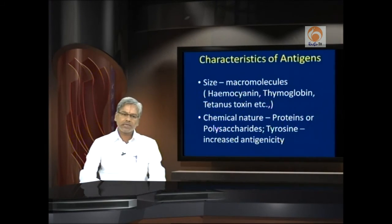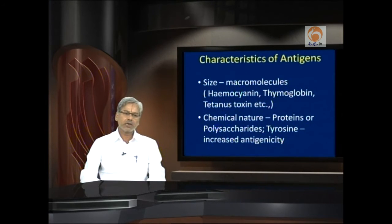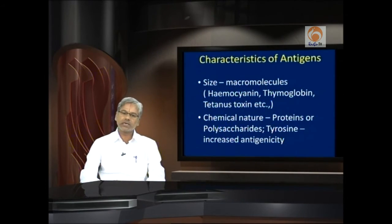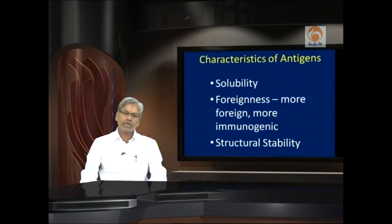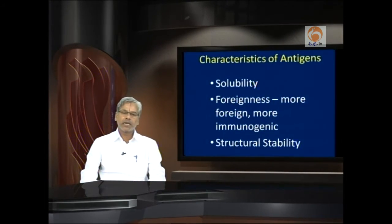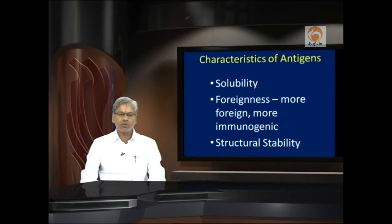Solubility of an antigen in body fluids is a key factor — an antigen must be soluble in body fluids to stimulate an immune response; the more the solubility, the more antigenic it is. Foreignness is also important: the more the foreign nature of the antigen, the more immunogenic it is. Structural stability is also a key factor — an antigen should be structurally stable to generate an efficient immunogenic response; when subjected to denaturation, immune response is generally poor.